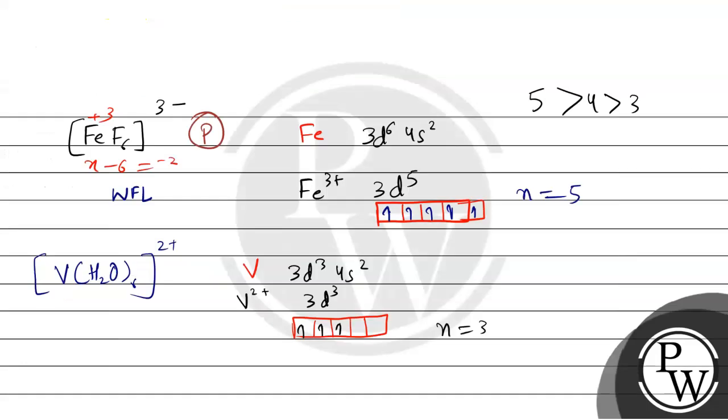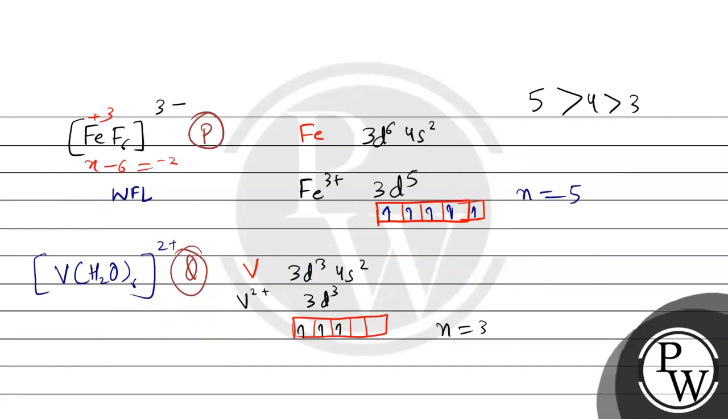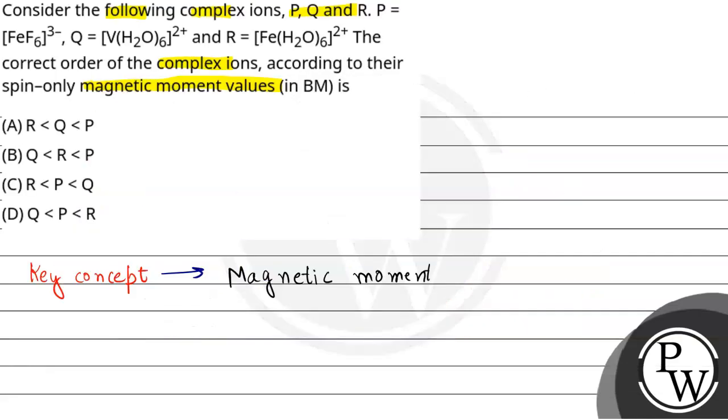We have Q here, here R. So we have order P, then R, and Q. The number of unpaired electrons: magnetic moment 5, 4, 5, 4, 3. What will be our final answer is going to be P, R.